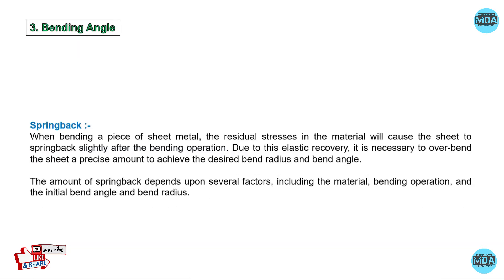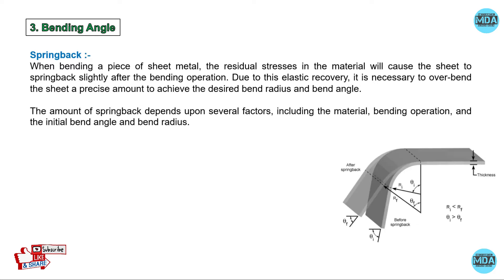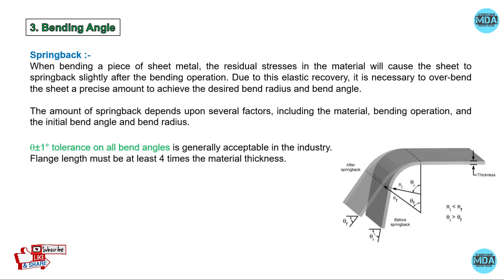For bending angle, we must consider spring back. While bending the sheet, residual stresses develop and cause the sheet to spring back slightly after the bending operation. Due to this elastic recovery, it is necessary to over-bend the sheet by a precise amount to achieve the desired bend radius and bend angle. We give a one degree tolerance on all bends, which is generally accepted in the industry.